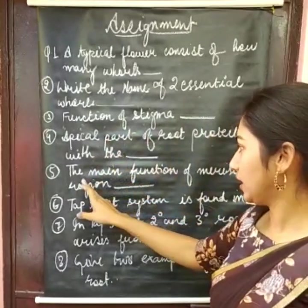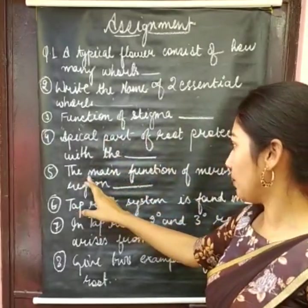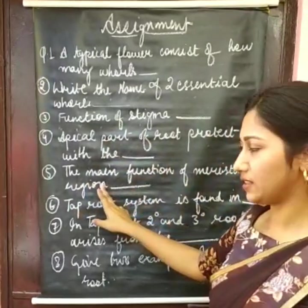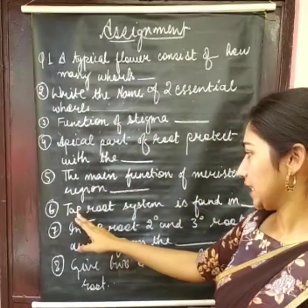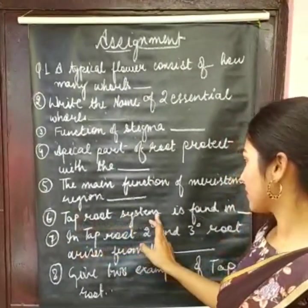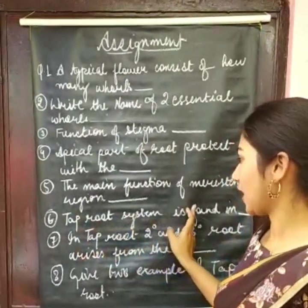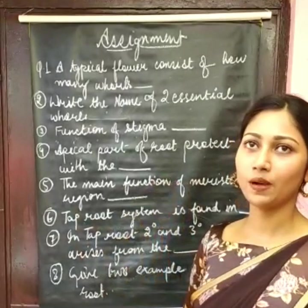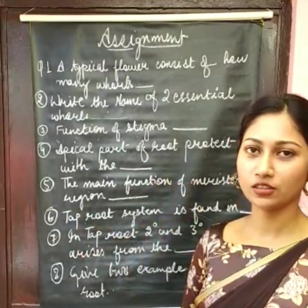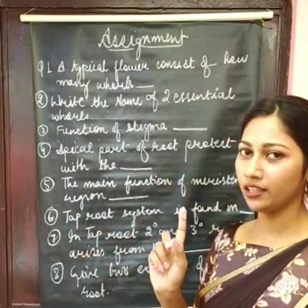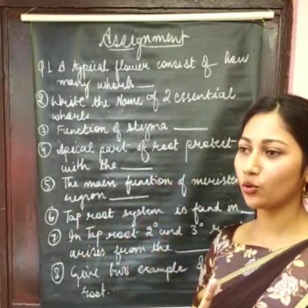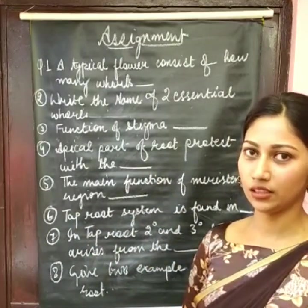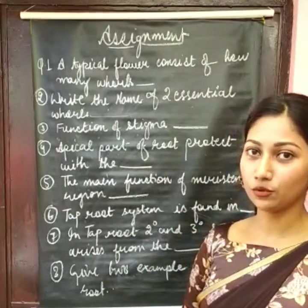Fifth: what is the main function of the meristematic region? Sixth: tap root system is found in which type — monocots or dicots? Here I have not told you about monocots and dicots in the lecture, but you have to find out.